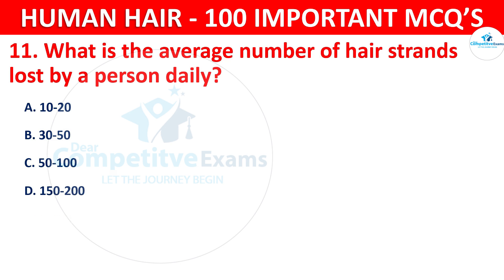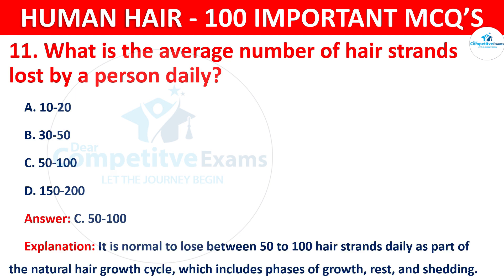The correct answer is C — 50 to 100 hair strands per day. It is normal to lose between 50 to 100 hair strands daily as part of the natural hair growth cycle, which includes phases of growth, rest, and shedding.